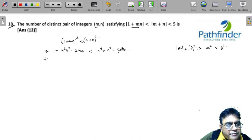You can cancel 2mn from both sides and take m² + n² to the left hand side. You will get 1 + m²n² - m² - n² < 0.